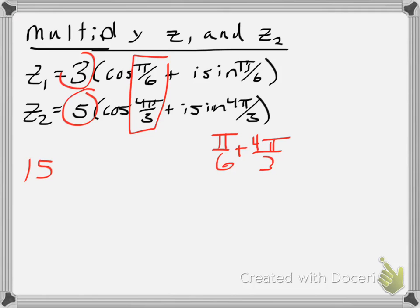So I need a common denominator of 6. So it gives me pi over 6 plus 24 pi over 6.